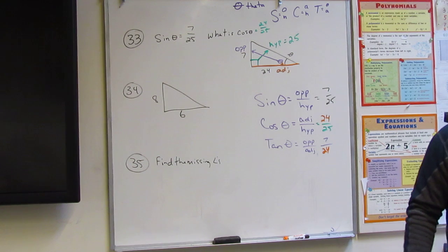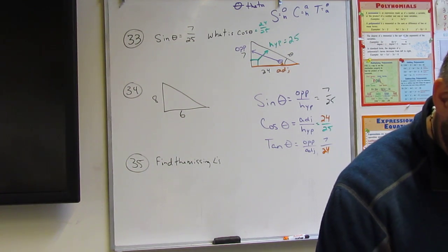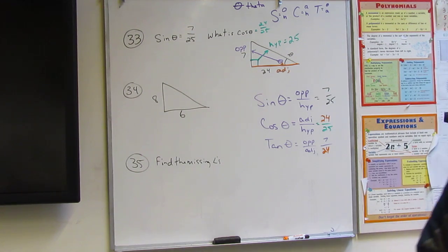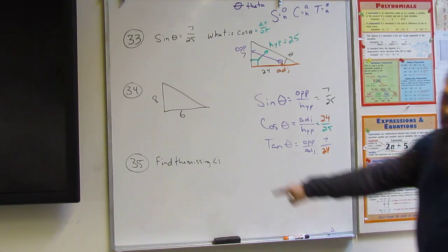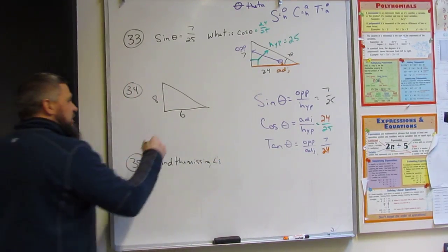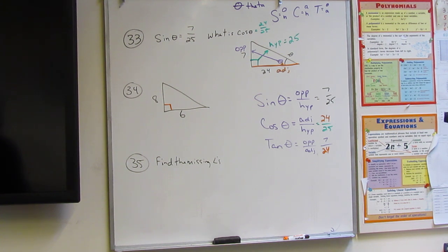Say no more. I have to say more because we've got to do 34 now. They want to know find the hypotenuse. How do you find the hypotenuse? Now this is a right angle. So how do I find the hypotenuse?